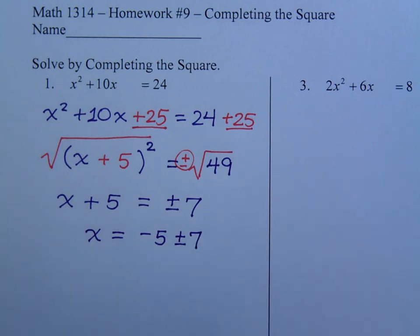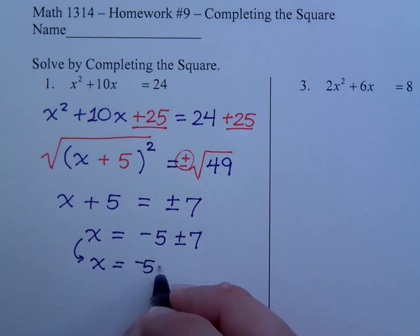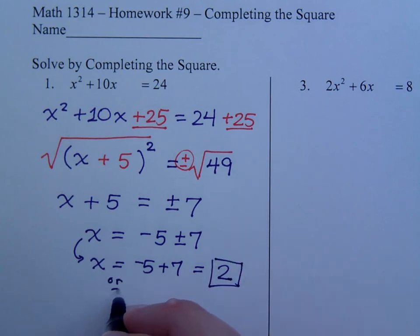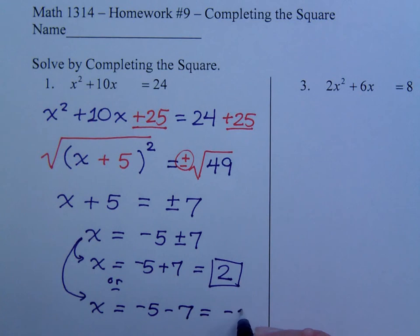So, that's x is equal to negative 5 plus or minus 7. As I stressed in the other video, if there's nothing radical or imaginary here, you just separate this to get your two answers. So, x is equal to negative 5 plus 7, which equals 2.